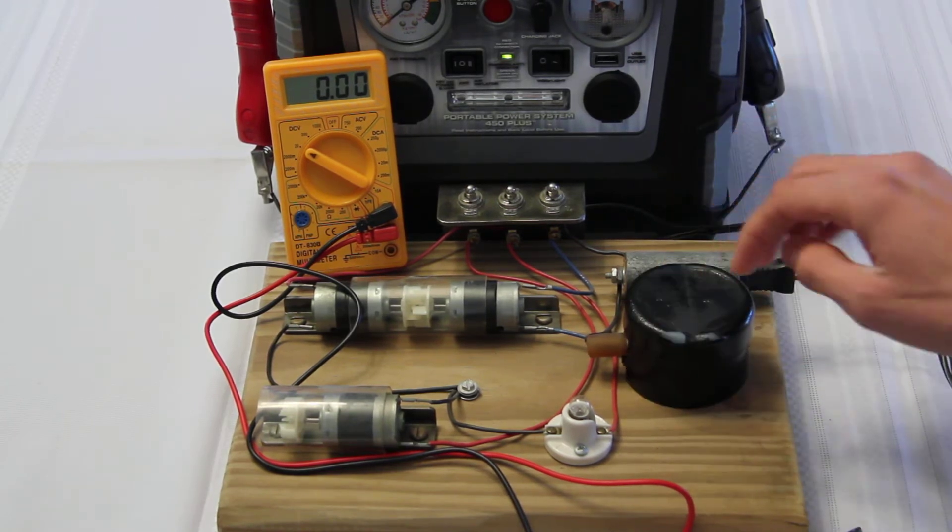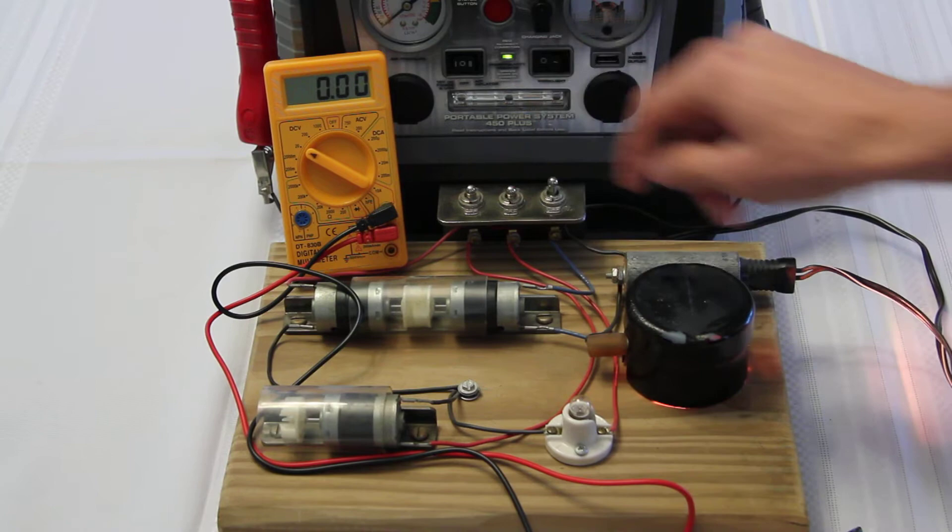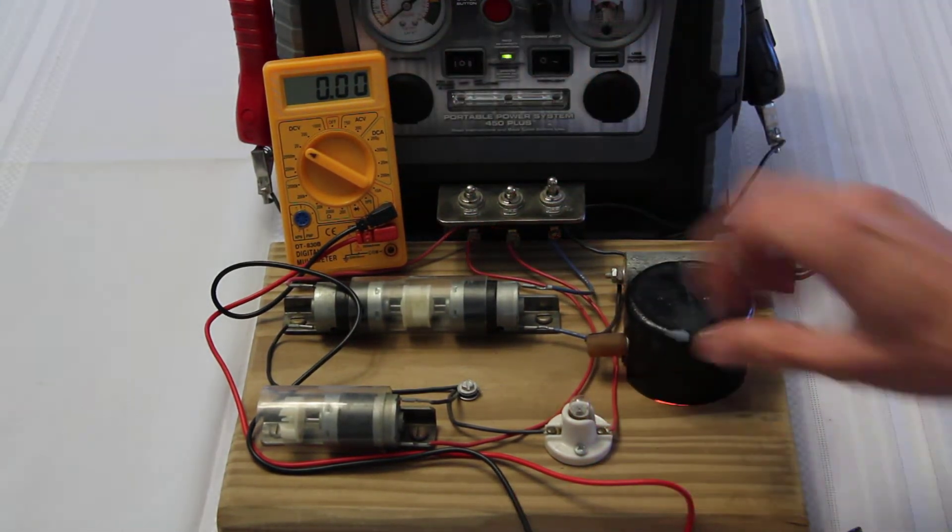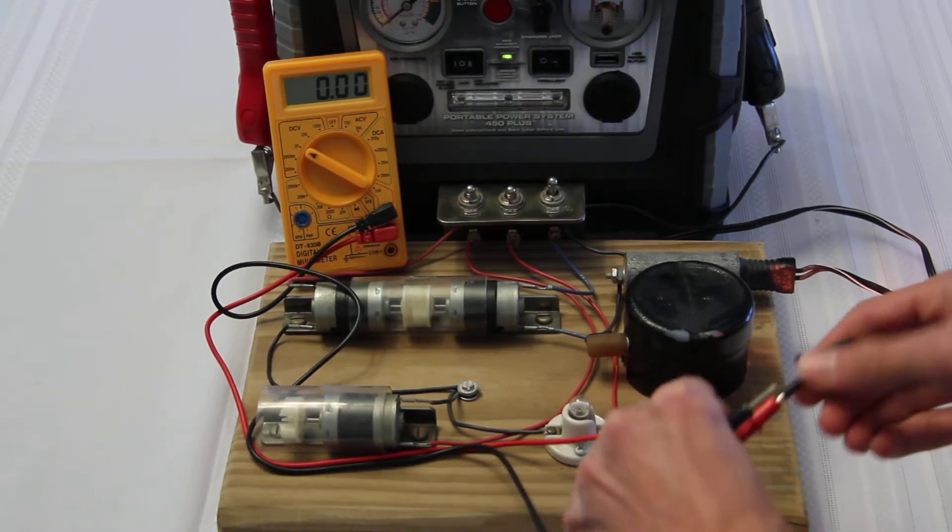So if you turn it on, it'll spin the motor and start generating power, and you can see the light bulb is lit. So what we can do is we can then test the voltage at the various points.